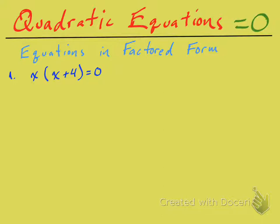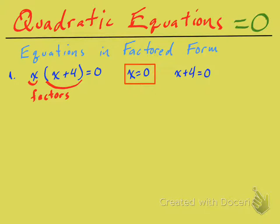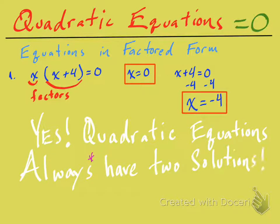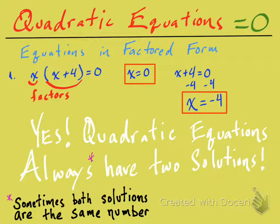There are our two factors. Set each one of those factors equal to zero, and right away we get one solution: x equals zero. For the other factor, x plus 4 equals zero — just subtract four from both sides, giving x equals negative four. Those are our two solutions. Quadratic equations always have two solutions, though sometimes both solutions are the same number.